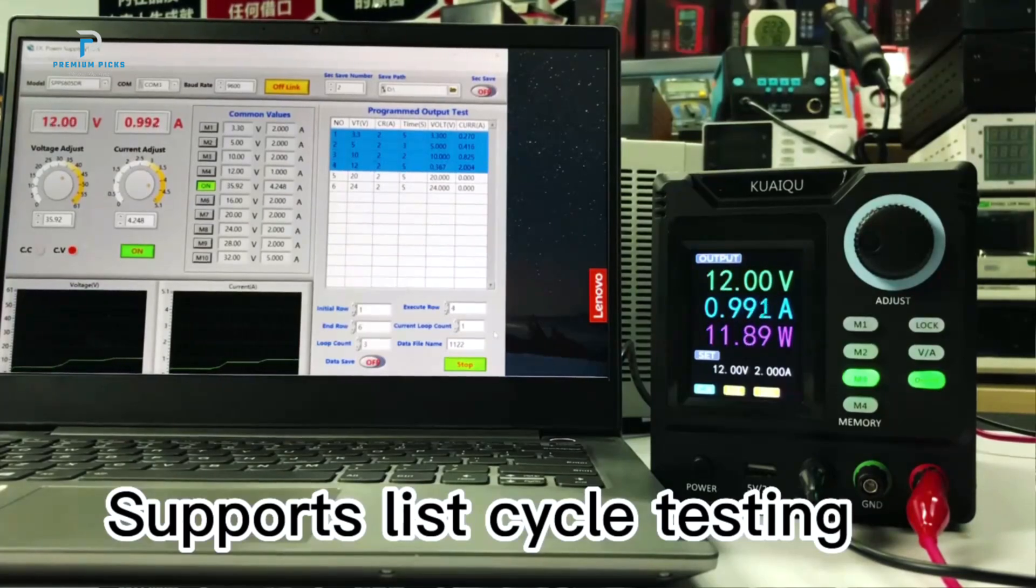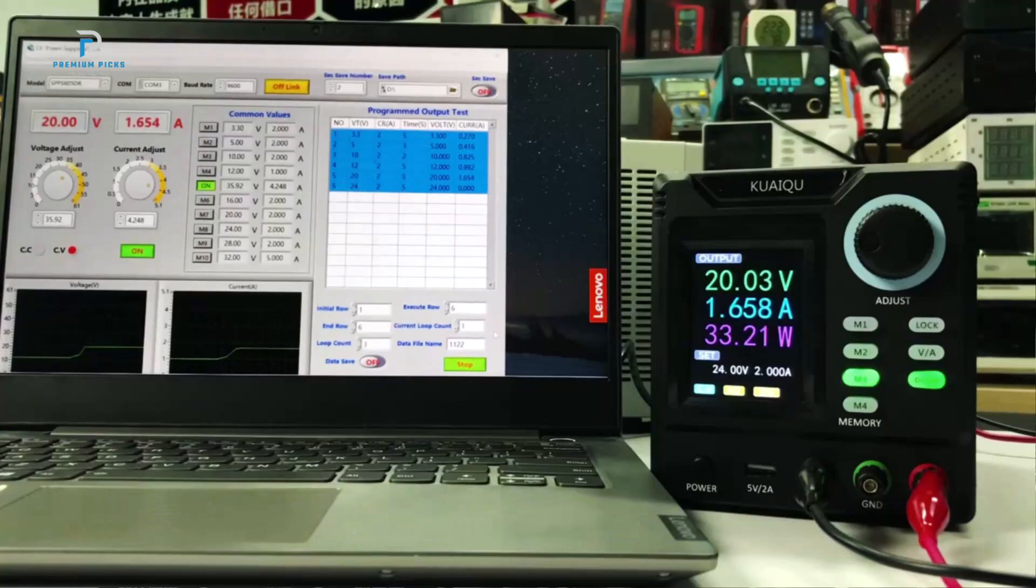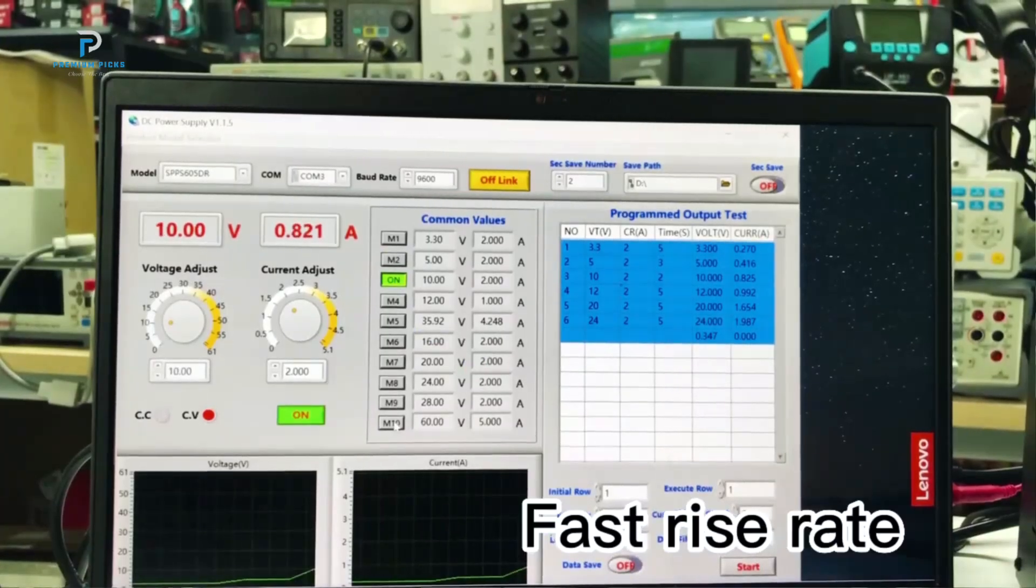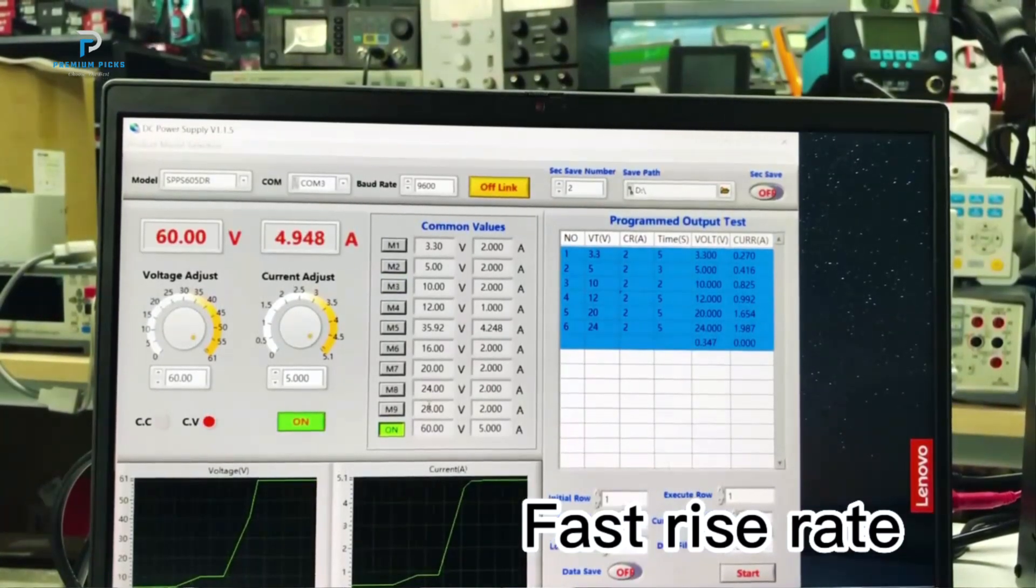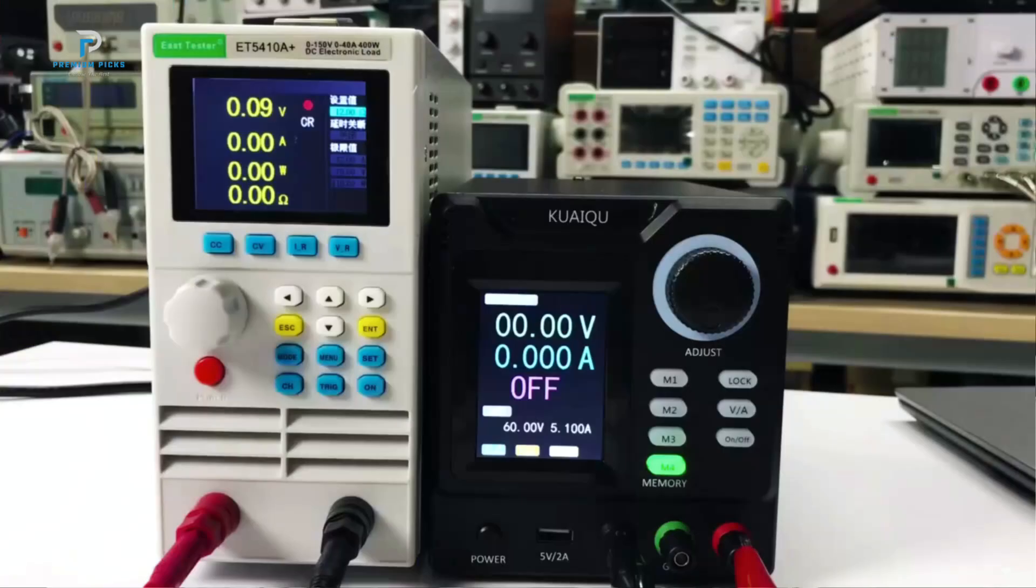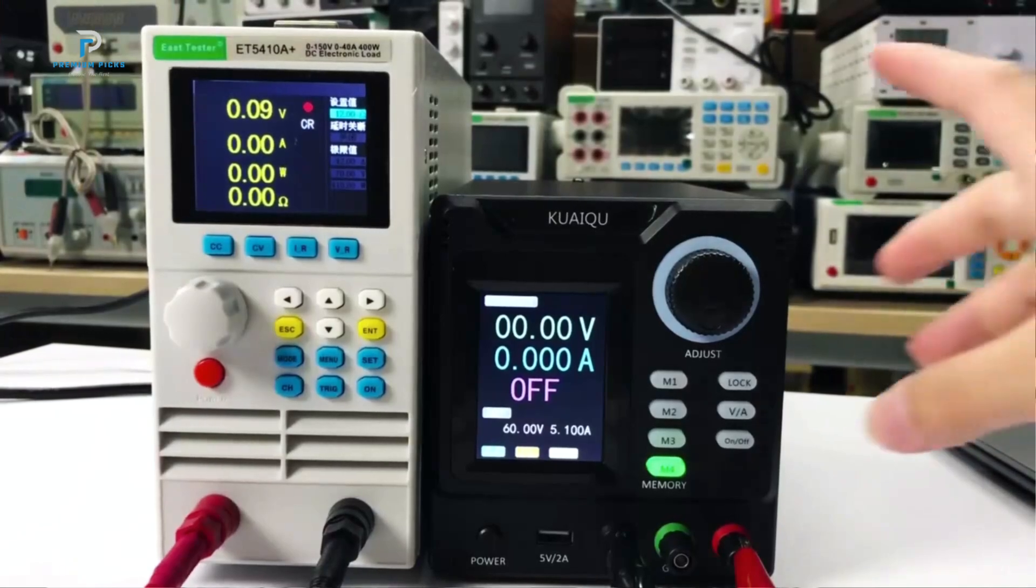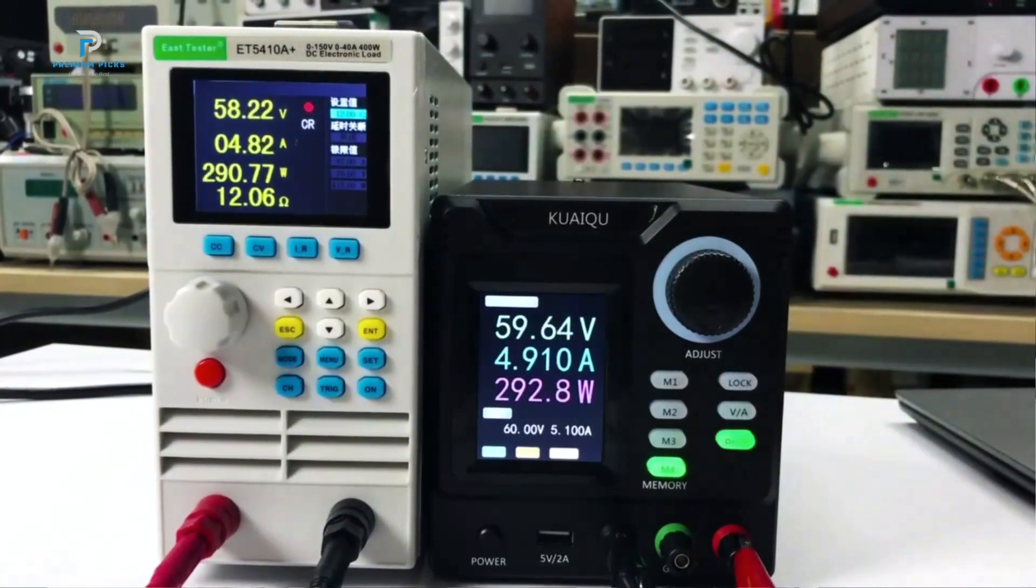Connectivity is another area where the QUITESU Power Supply shines. With USB and RS-232 interfaces, you have the flexibility to control the device remotely and store data, making it especially valuable for those who need to monitor power levels or maintain consistent power delivery across long-term experiments. This capability allows for smooth integration into complex setups or automated systems, providing unmatched convenience.